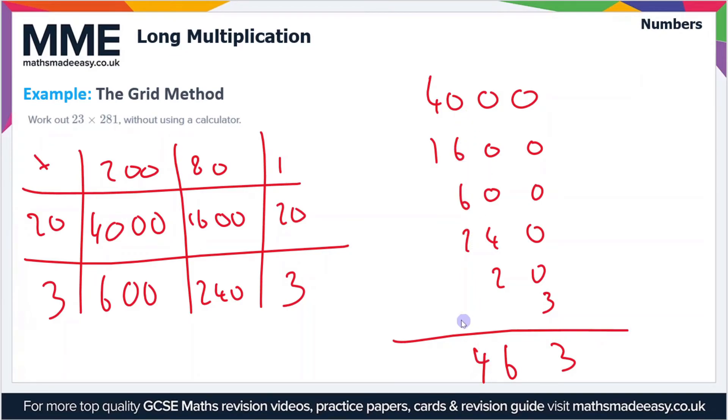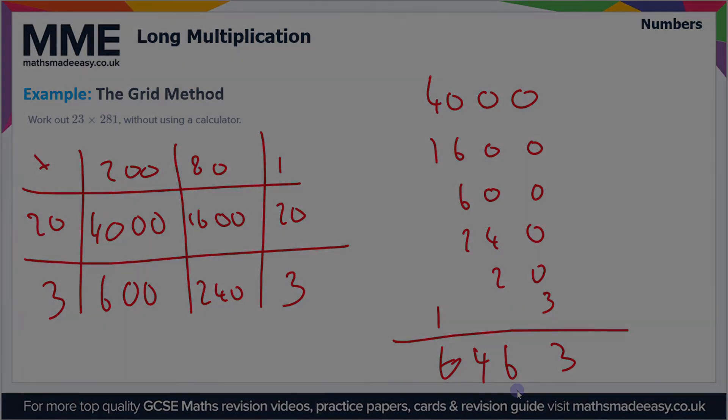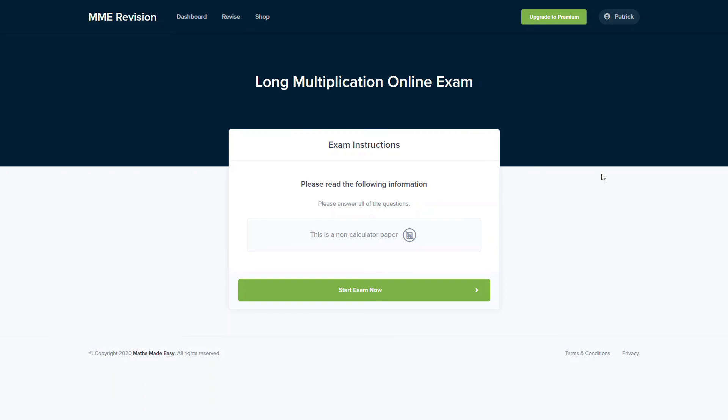We've got 4 plus 1 plus 1, so that gives us a 6 in this column. So our final answer then is 6,463.